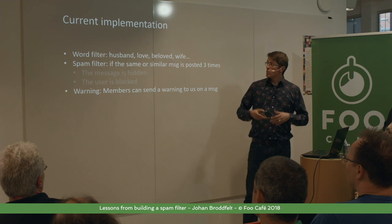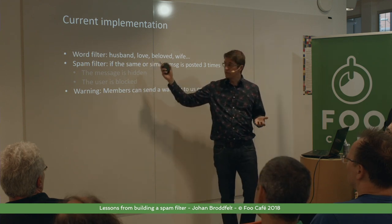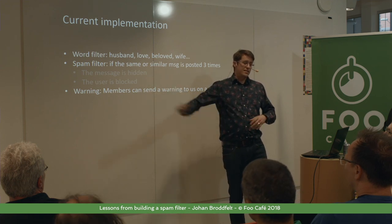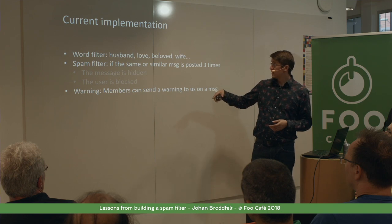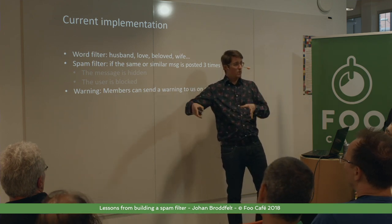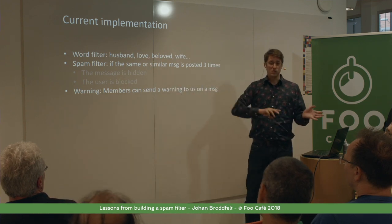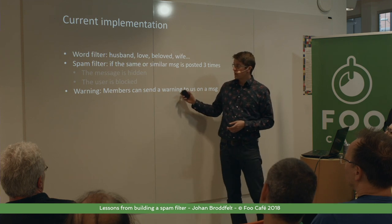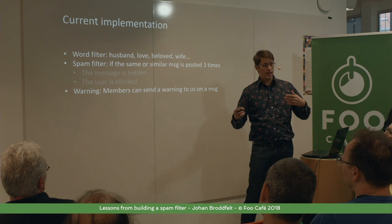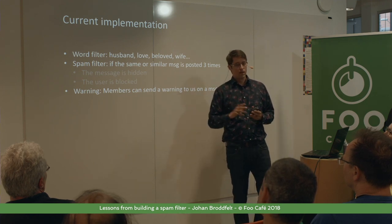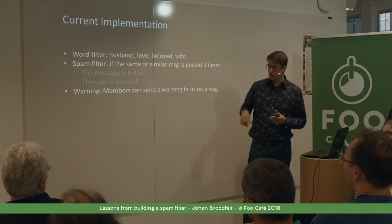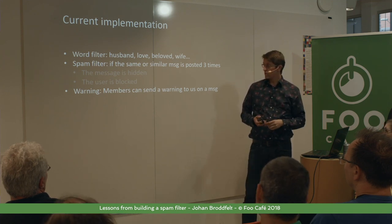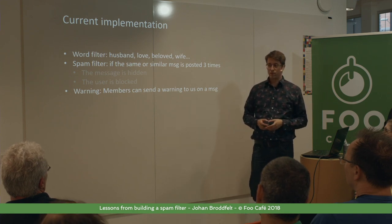What do I have today to manage this? I have a simple word filter that looks for words like husband, love, beloved, wife — if I get any of these I delete the user. I have a spam filter that checks if a user posts the same comment three or four times in a row, then I also delete the user and all comments. And I have a warning function where users can click a warning triangle and we get an email — though this might take some time and many members might see the comments before we get any information.